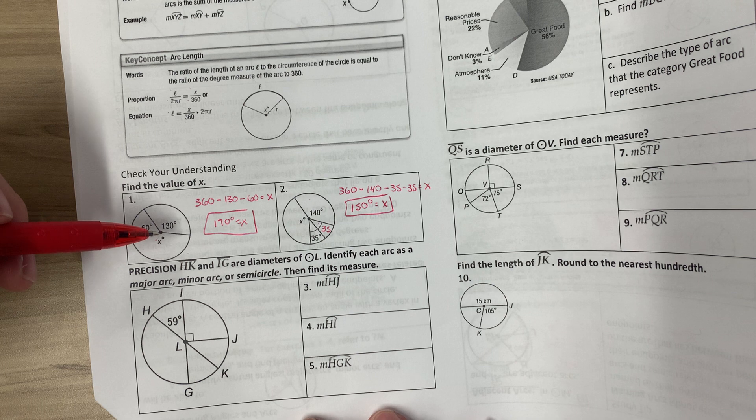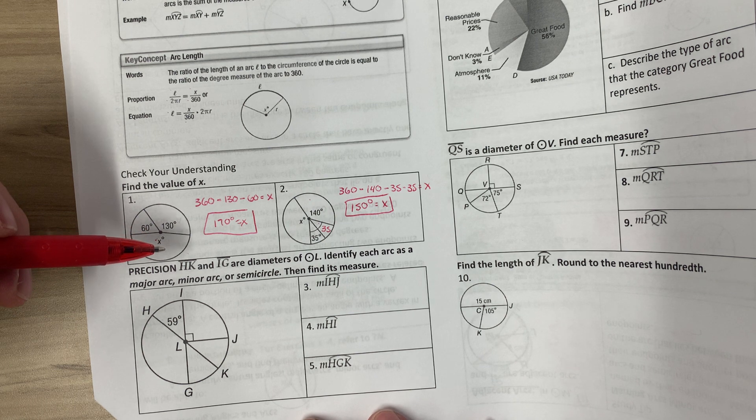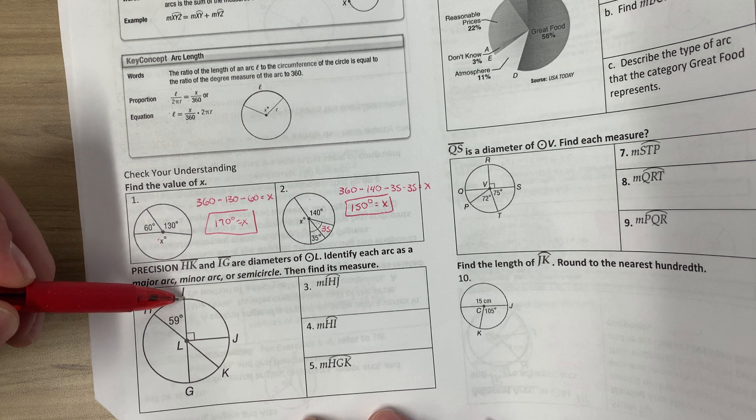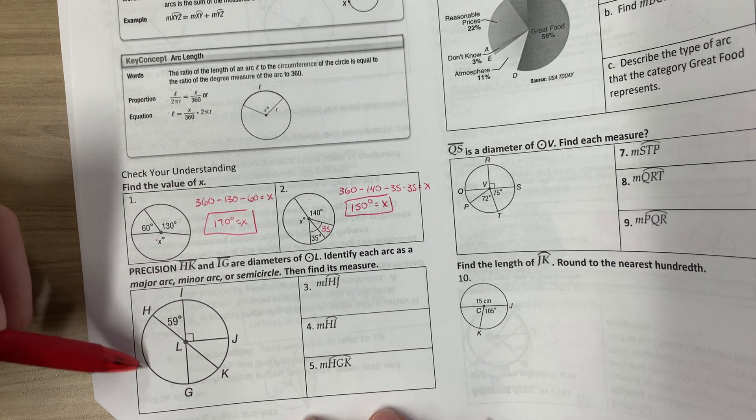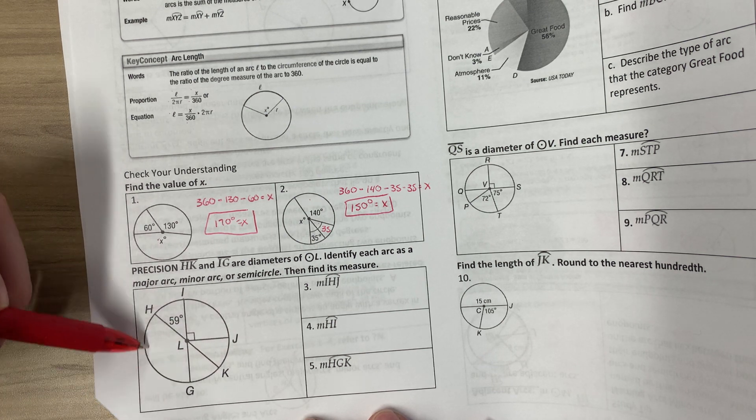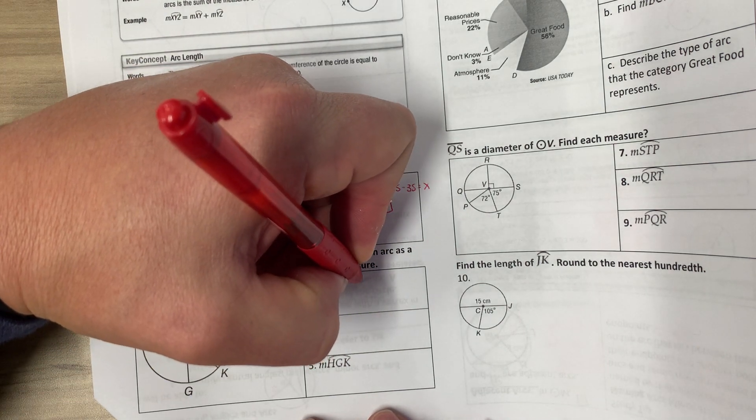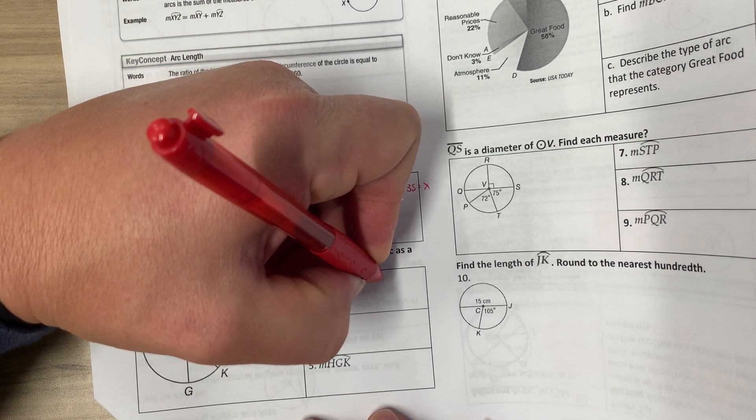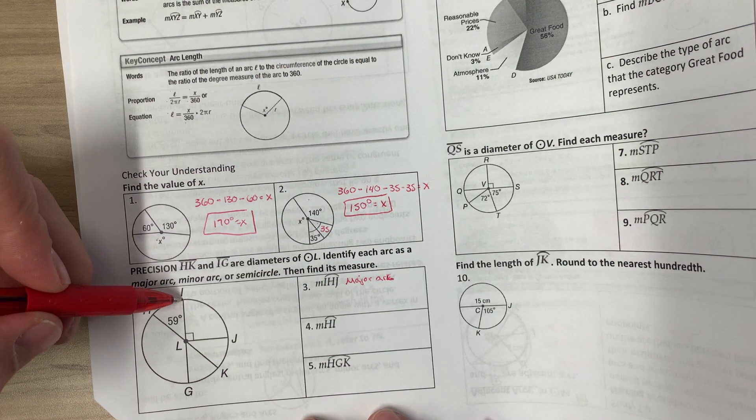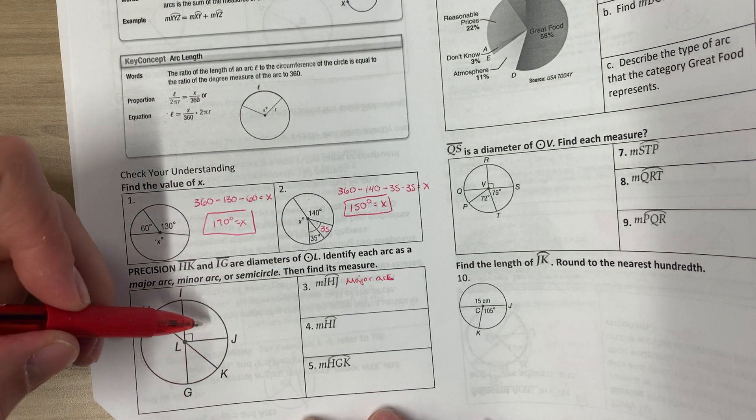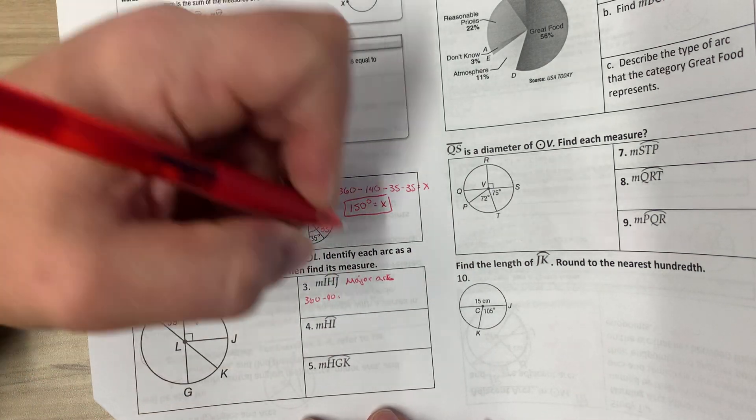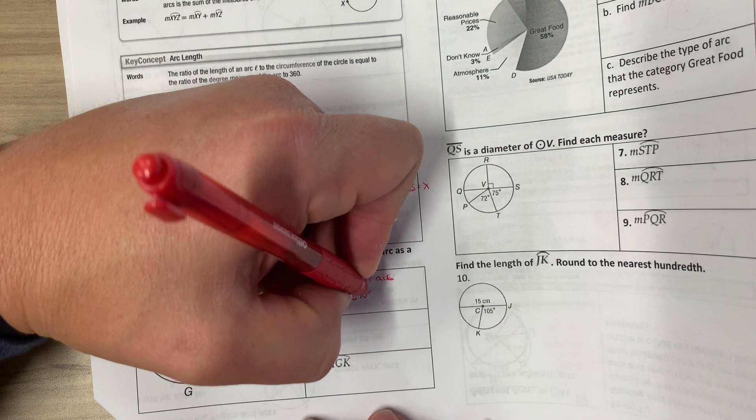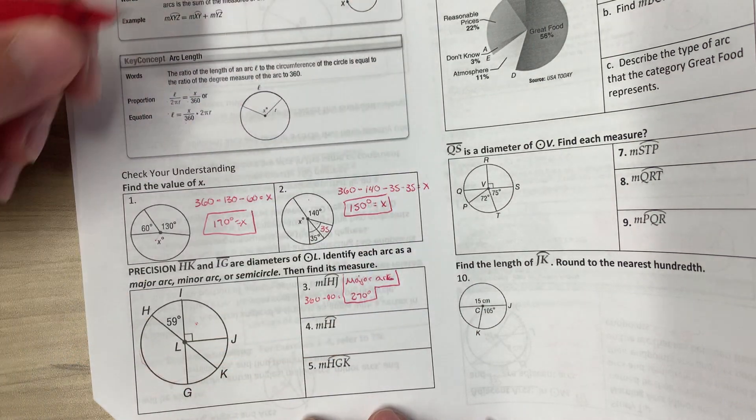HK and IG are diameters of circle L. Identify each arc as a major arc, minor arc, or semicircle, then find its measure. IHJ, so we're going all the way around here, it's going to be a major arc. And since we're going all the way around here, we just do 360 minus 90, which is equal to 270 degrees. It's a major arc at 270 degrees.